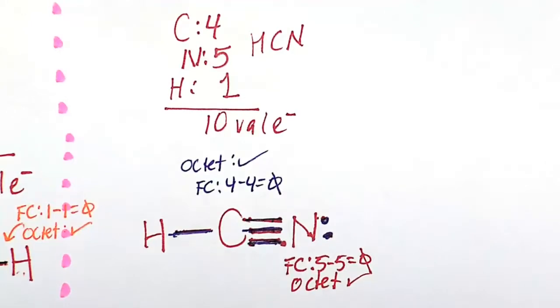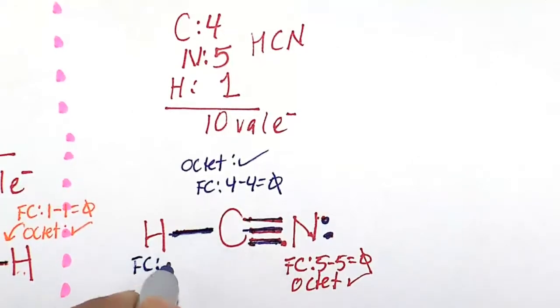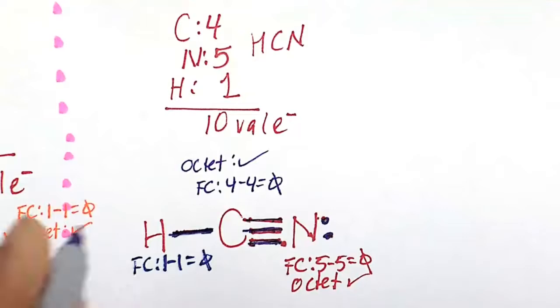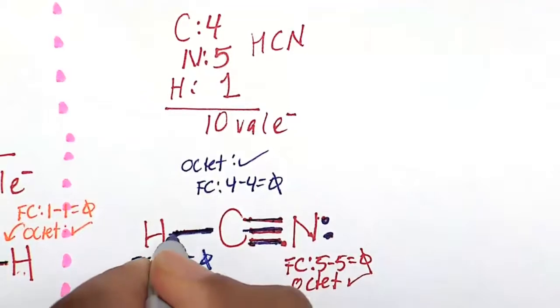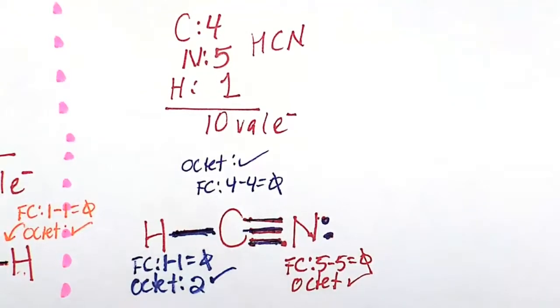Hydrogen here, it's kind of the weird one. Hydrogen formal charge. Hydrogen is happy at 1. So 1 minus 1 is 0, zero formal charge. And octet rule for hydrogen is 2. So 1, 2, this satisfies the octet rule.